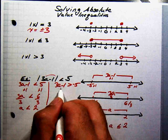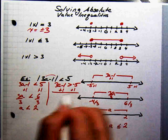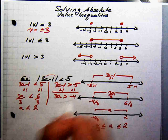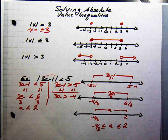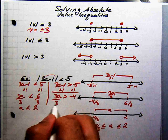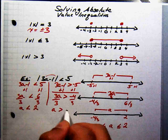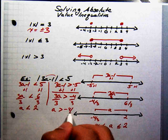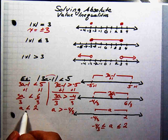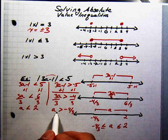Now for the second inequality: we switch the inequality symbol and switch the sign, so 3a minus 1 is greater than negative 5. Adding 1 to both sides gives 3a is greater than negative 4, and dividing by 3, a is greater than negative 4 thirds. So we have a is less than 2 and a is greater than negative 4 thirds.